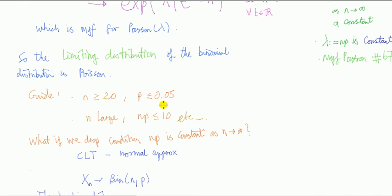n is greater than or equal to 20, p is less than or equal to 0.05. Another one is that n is large, np is less than or equal to 10. Mainly, just look at what your professor says.